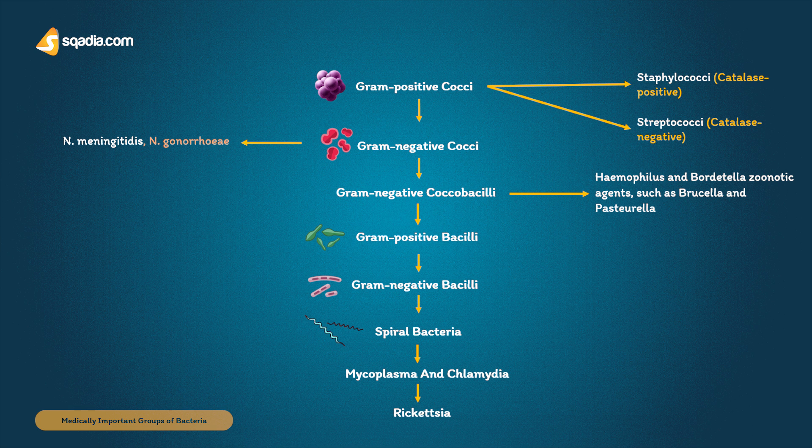Gram positive bacilli are divided into sporing and non-sporing. The sporing types are subdivided into those that are aerobic and those that are anaerobic. Pathogens include Bacillus anthracis, which causes anthrax, and Clostridia, which cause pseudomembranous colitis, tetanus, and more rarely gas gangrene and botulism.